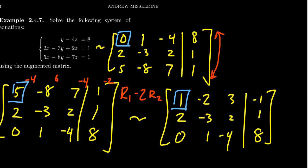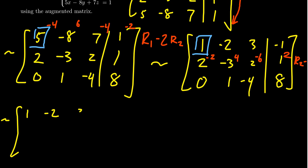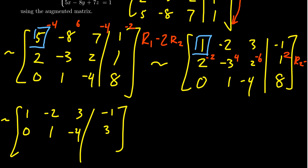We replace row 2 with row 2 minus 2 times row 1, giving us negative 2, positive 4, negative 6, and positive 2. Since there's already a 0 in the 3,1 position, we don't have to do anything with that row. Copying down the first row unchanged, for the second row we get: 0, negative 3 plus 4 is 1, 2 minus 6 is negative 4, and 1 plus 2 is 3. Then copying down the third row: 0, 1, negative 4, and 8.